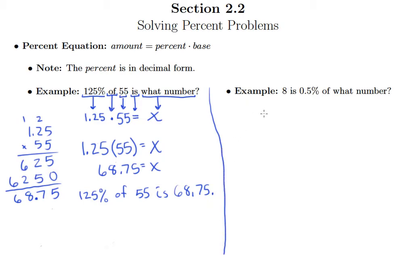So it says 8 is 0.5% of what number? So 8 is means equals. And then remember, instead of using 0.5%, we will write it in decimal form. So move that decimal to the left two places. So this will be 0.005. The word of means times. And then what number? We put some variable in its place there, but I'll just use X again. So what we have here is 8 equals 0.005 times X.